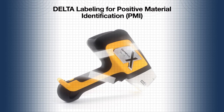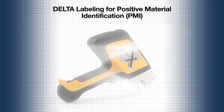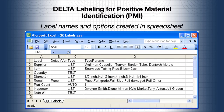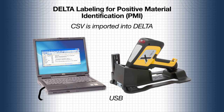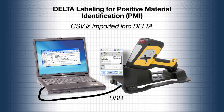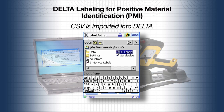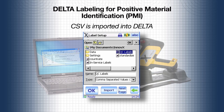Creating and populating labels on the Delta is a simple process. First, the label names and their options are created in a spreadsheet. Then the CSV version of the spreadsheet is imported into the Delta, which automatically creates the labels and their options. This is a great way to reduce your analyzer's setup time.